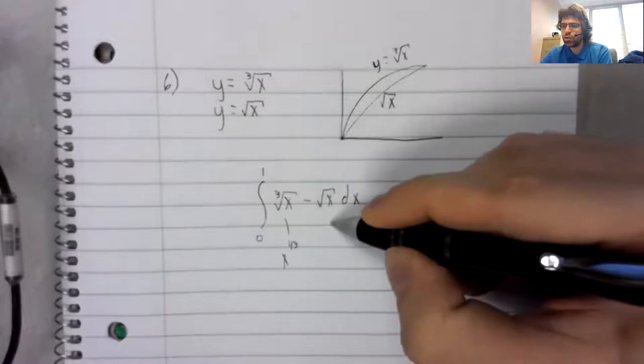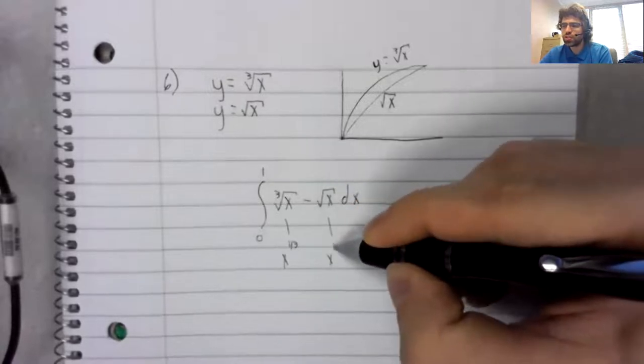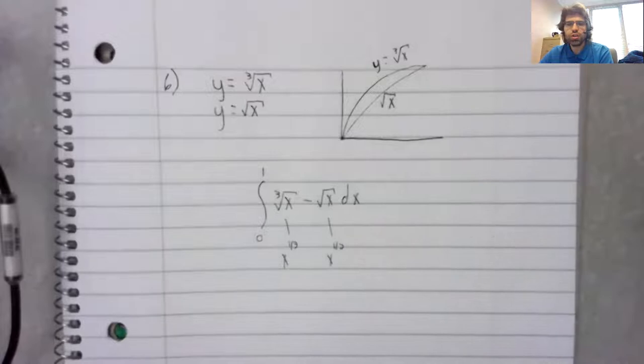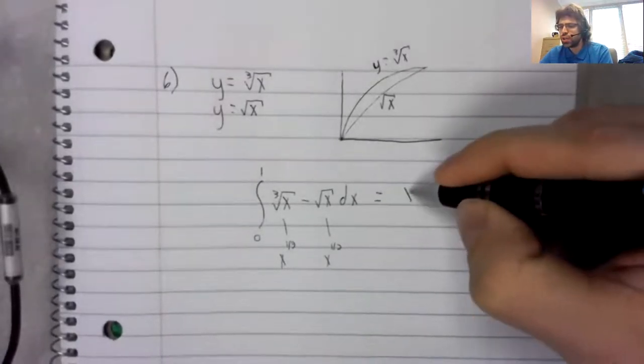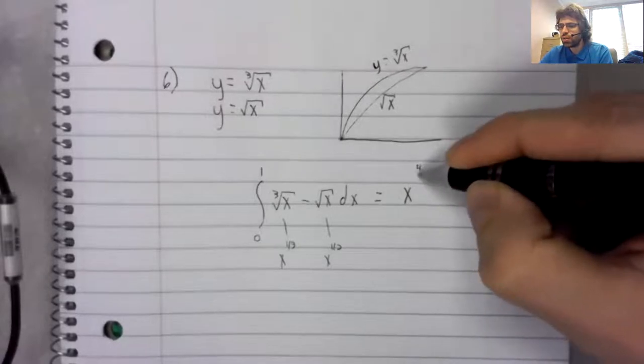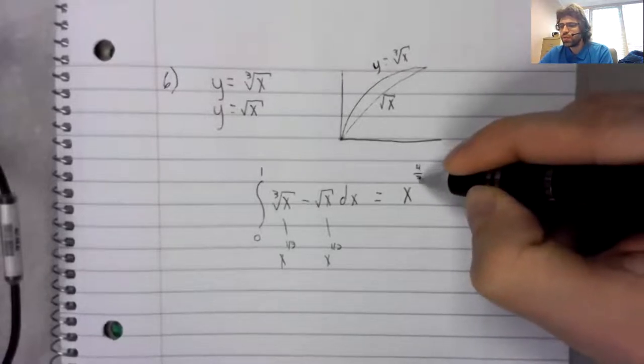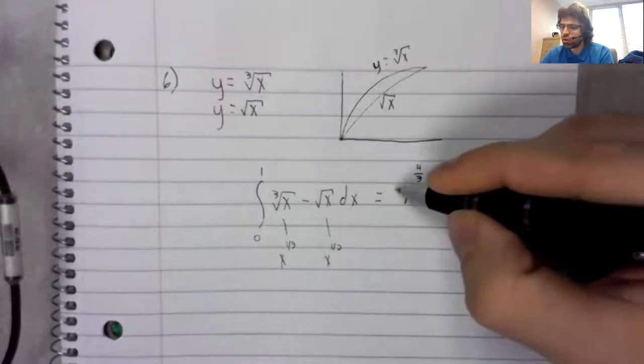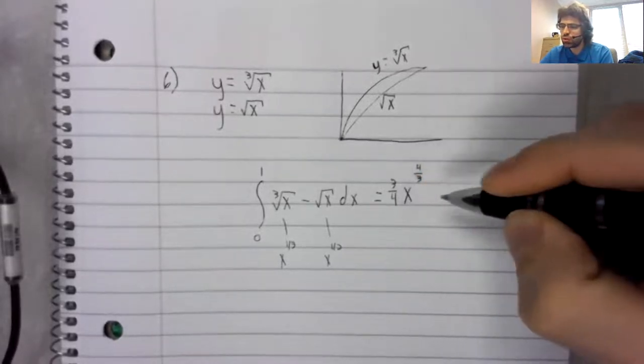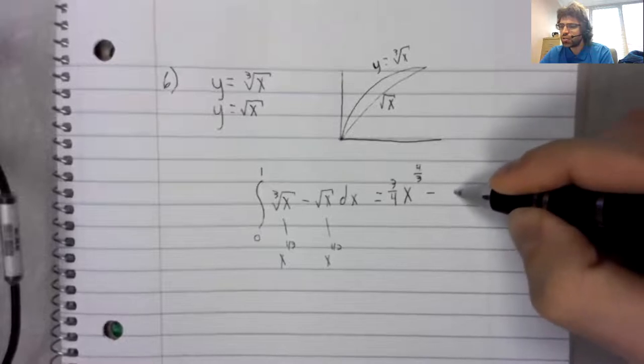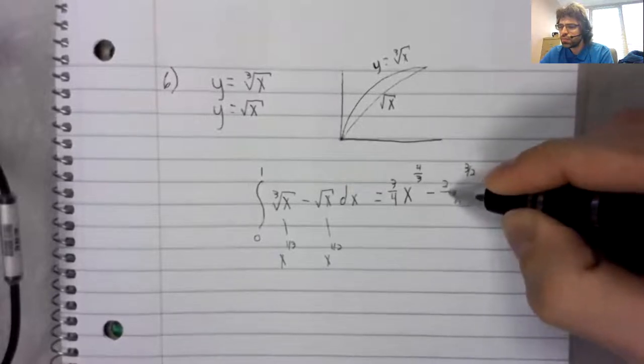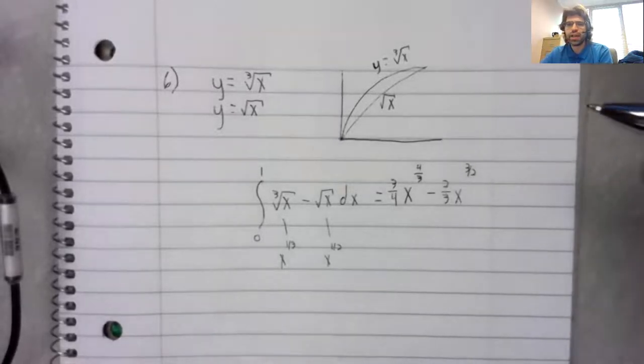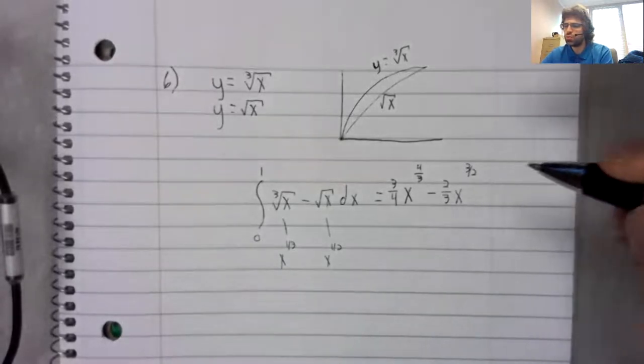Remember the cubed root is x to the one third. So that will bump up to four thirds and we'll put a three fourths. X to the one half will bump up to three halves and we'll put a two thirds.